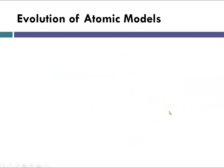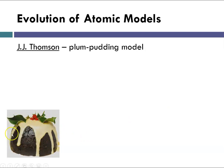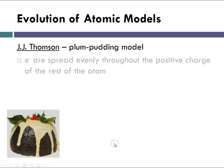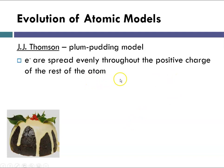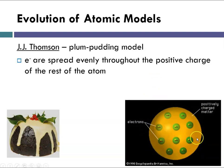Continuing with atomic models — after Dalton's model, JJ Thomson put forth his own model of the atom called the plum pudding model. He was British, and plum pudding is a very solid pudding, almost like a cake, with tiny raisin-like things called currants inside. He said that electrons in an atom are spread evenly throughout a positive charge — like a plum pudding — where the cake represents the positively charged mass and the electrons are like the little currants.